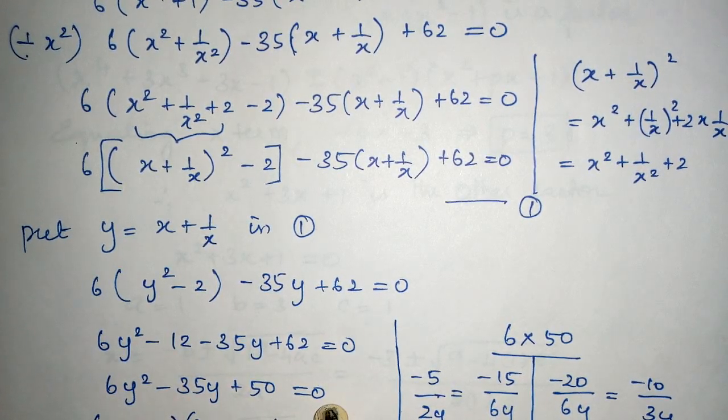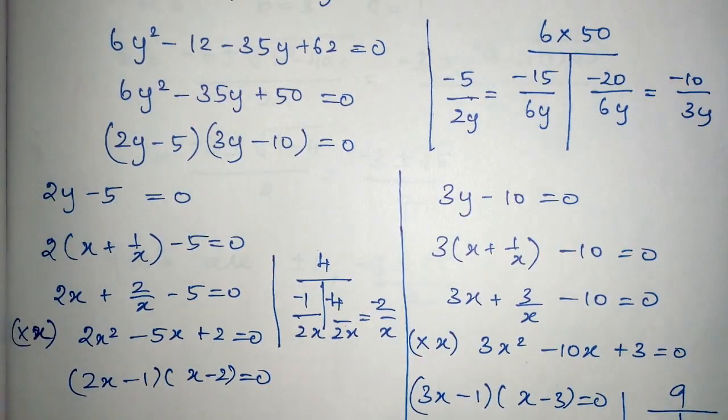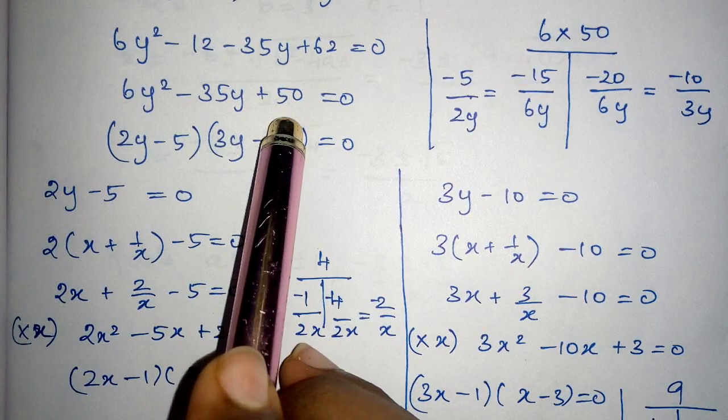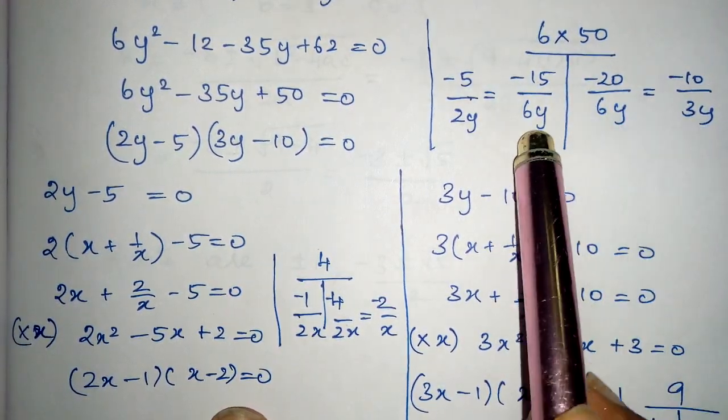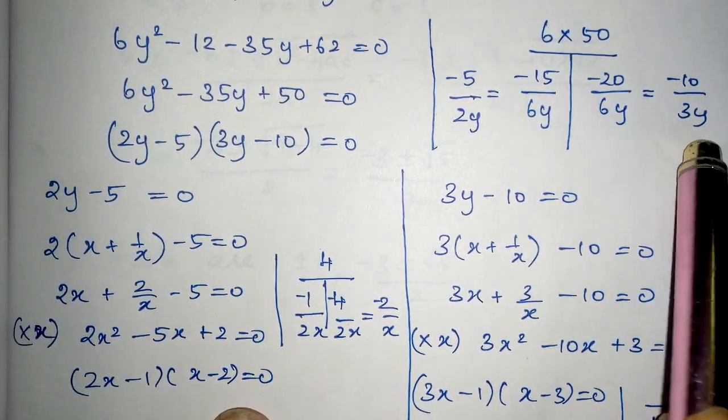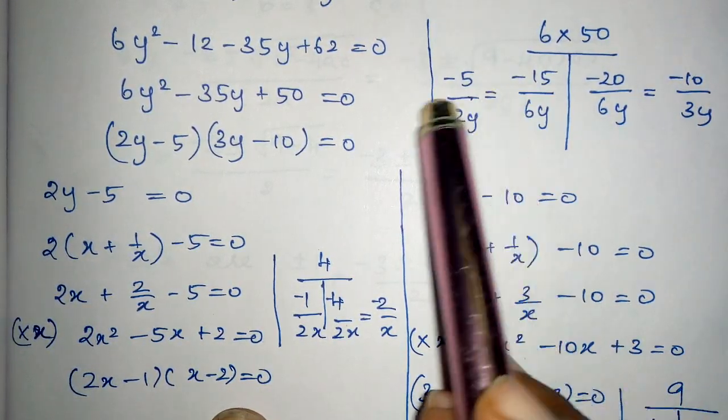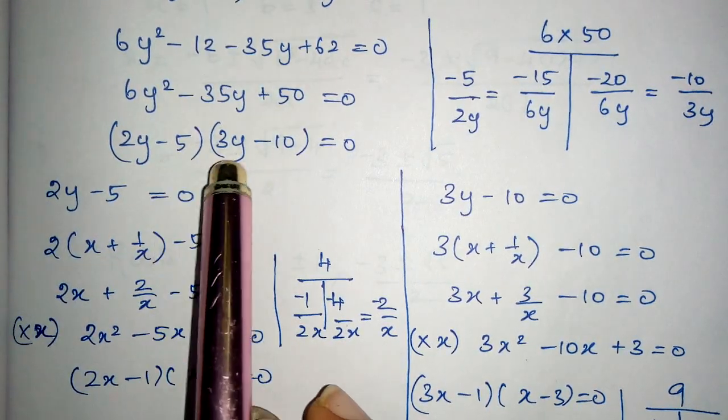6y² - 12 - 35y + 62 = 0, which is 6y² - 35y + 50 = 0. This is a quadratic equation. Now I have to solve using the T method. Using T method, 6 × 50, I can write this as -15, -20 divided by 6y.